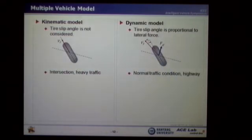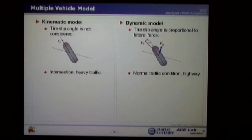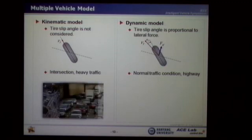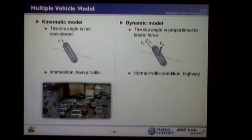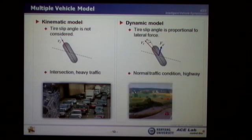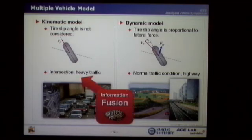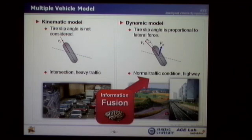For the kinematic model, since the tire slip angle is not considered, it is reasonable for low-speed conditions such as intersection or heavy traffic. In contrast, the dynamic model assumes the tire slip angle is proportional to the lateral force, and therefore it is reasonable for normal traffic conditions or highway driving. The information fusion algorithm selectively uses these two kinds of models depending on the driving condition.